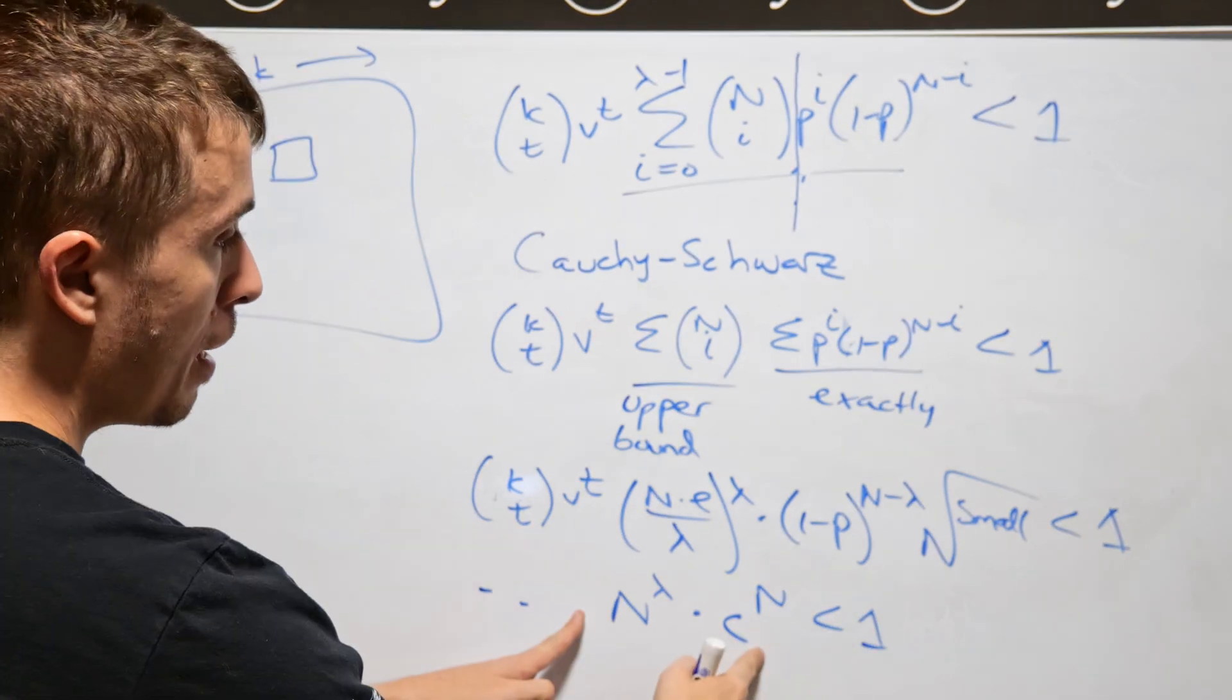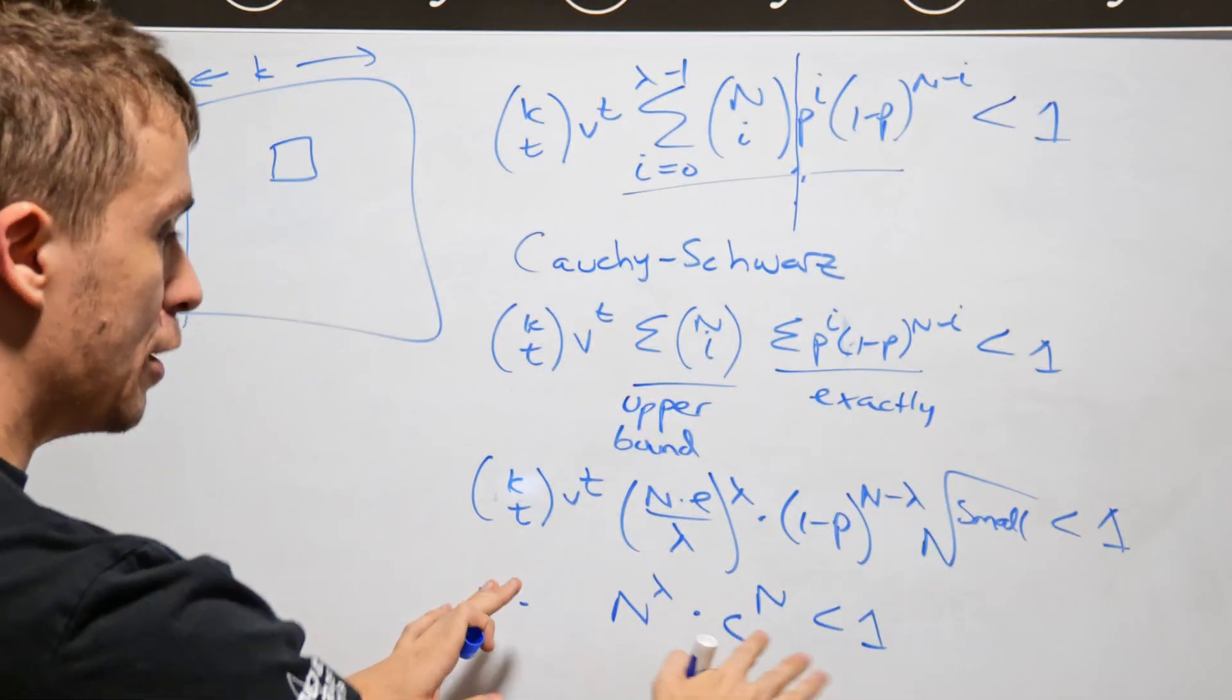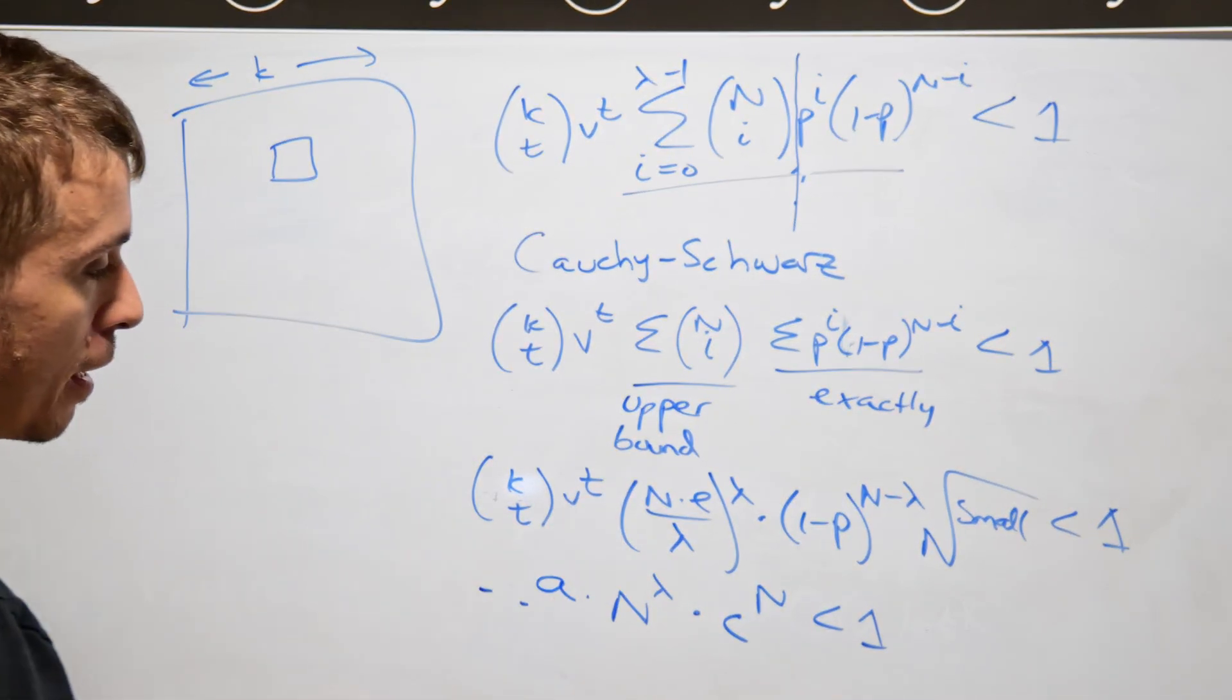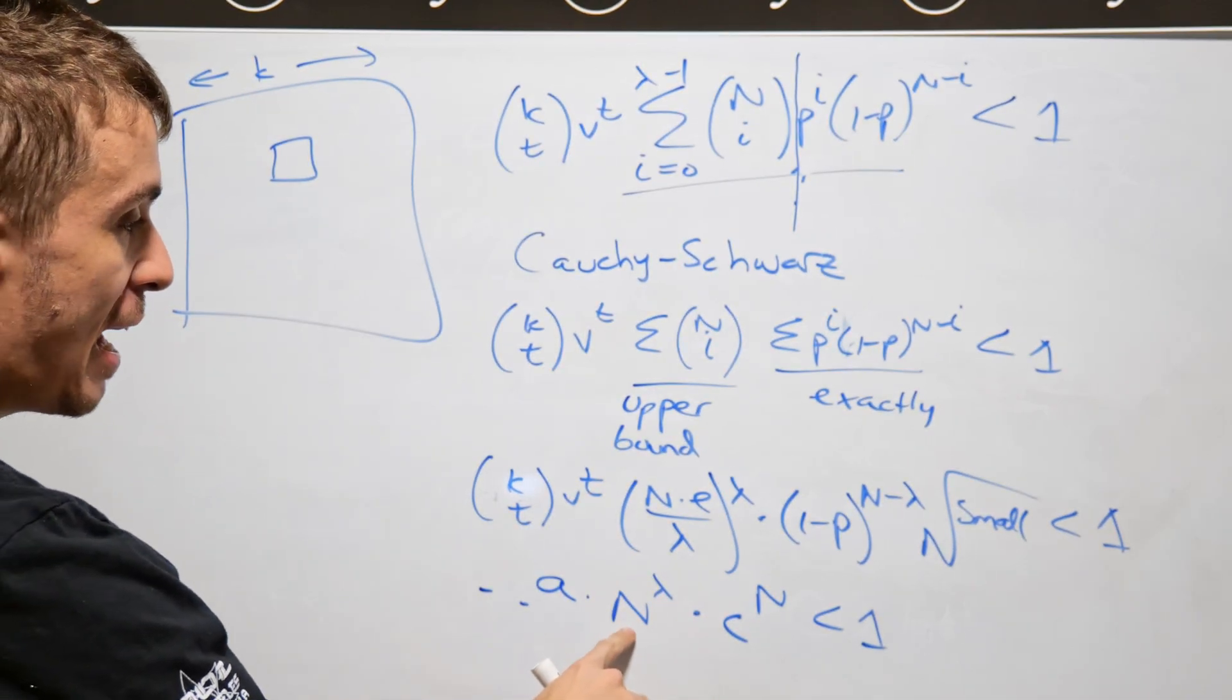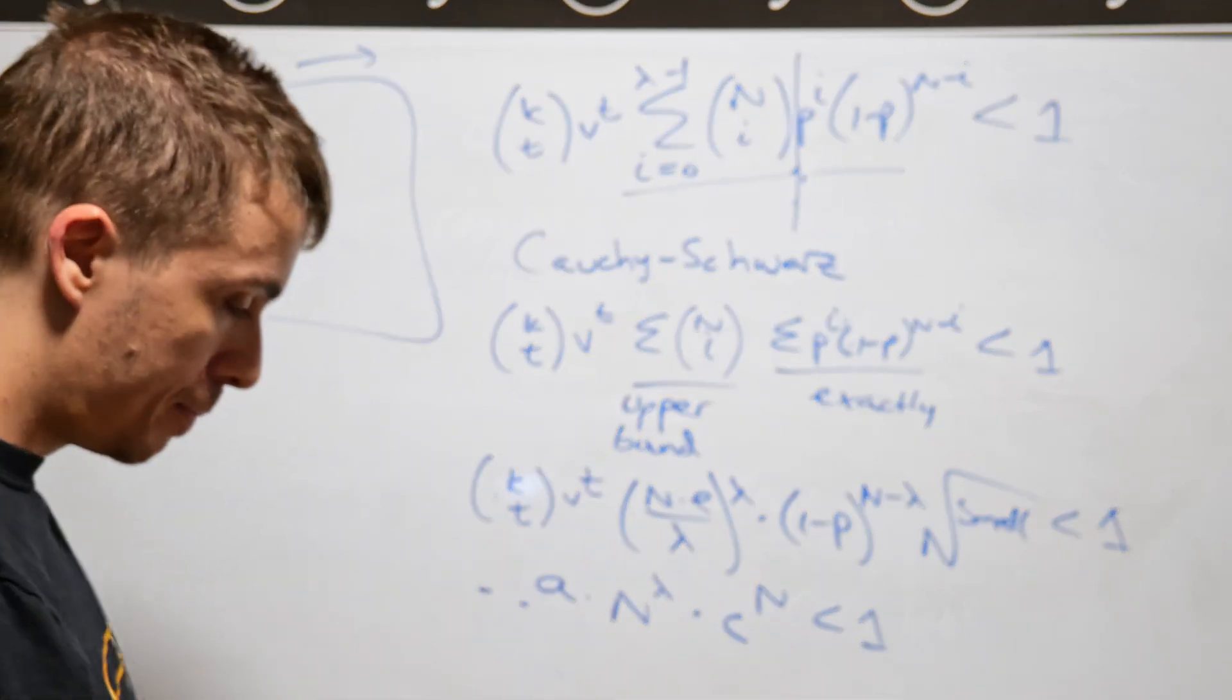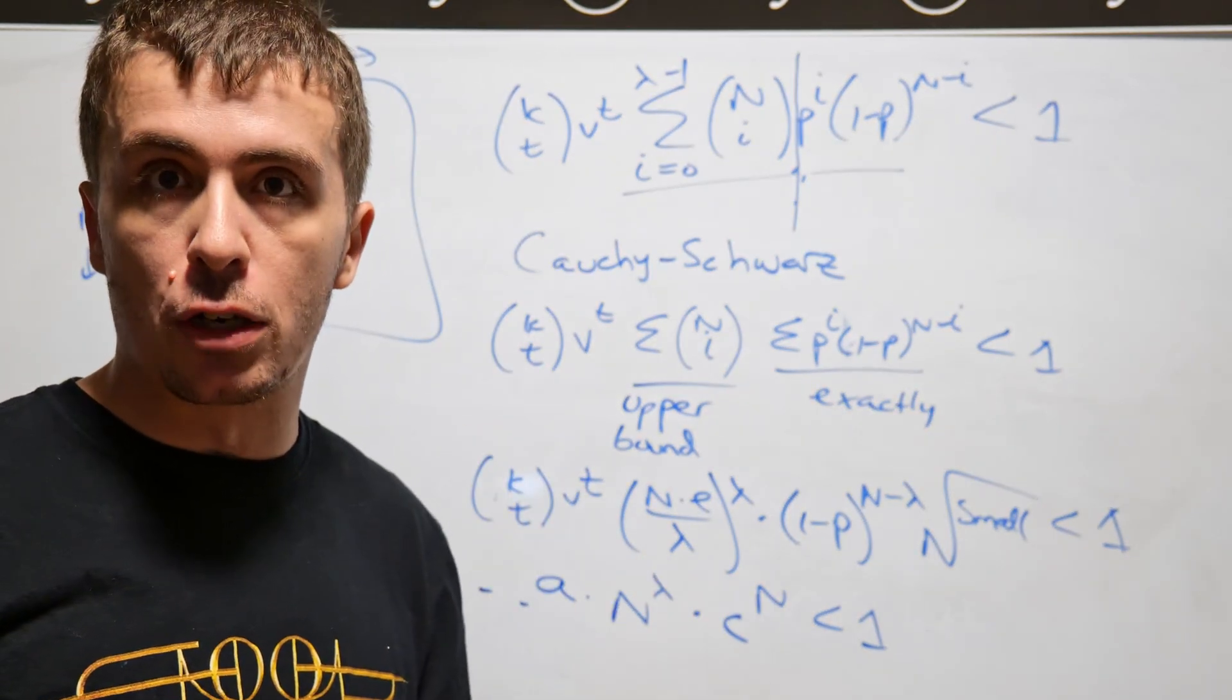So then now we've basically reduced this problem to n to the power lambda, so it's going to be something times n to the lambda, times some other number to the power n, that is less than 1. All I'm doing here is taking everything else that doesn't involve n at all, and then just wrapping it up into a constant, and let's call it a or something. And then now, what we want to do is we want to figure out what value of n causes this to be less than 1. And so now here comes the big trick, and it's something called the Lambert W function.